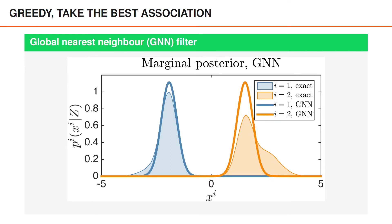If we make a greedy approximation, which is what GNN does, then for this example we get the approximate marginal posteriors shown here. The GNN posterior matches the main peaks of the exact marginal posteriors. However, there's a fair amount of difference between the exact and the approximation. Especially for the second object, on the right in orange color, there's a fair amount of probability density that the GNN approximation does not capture.